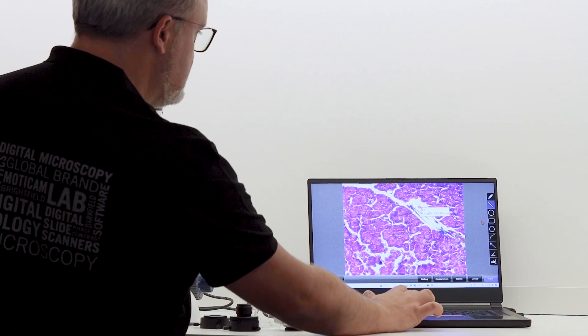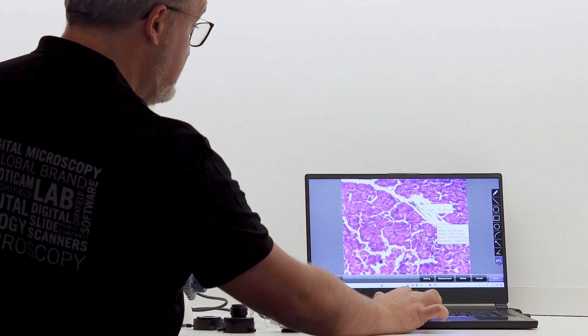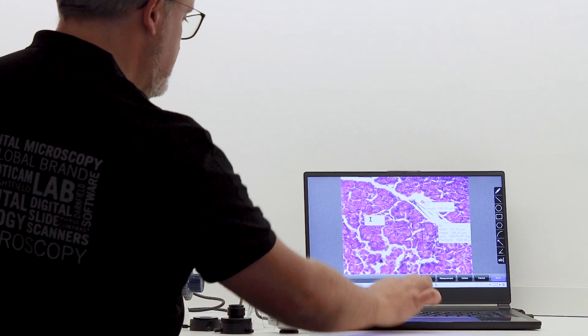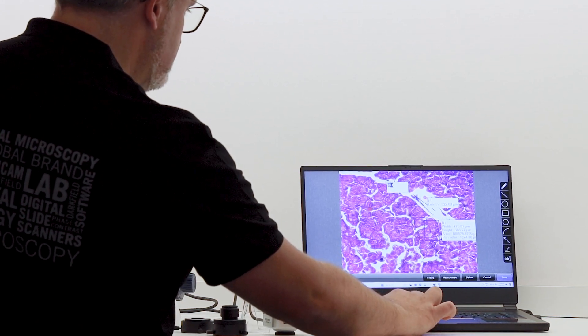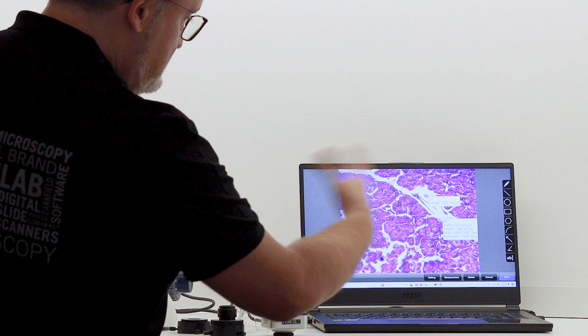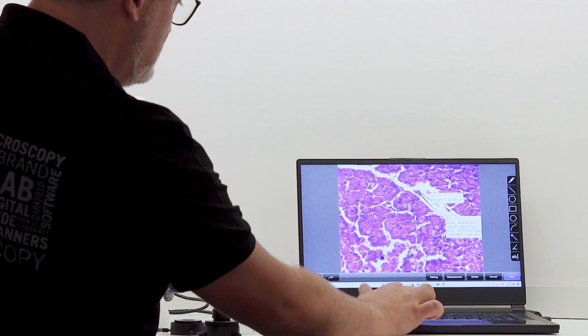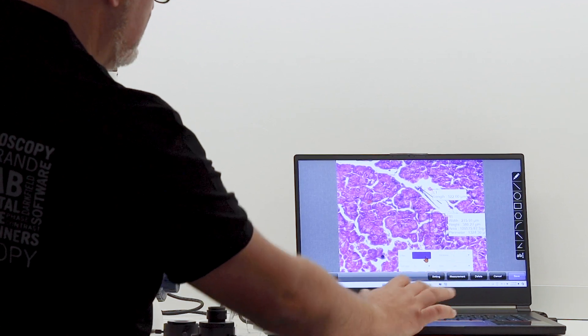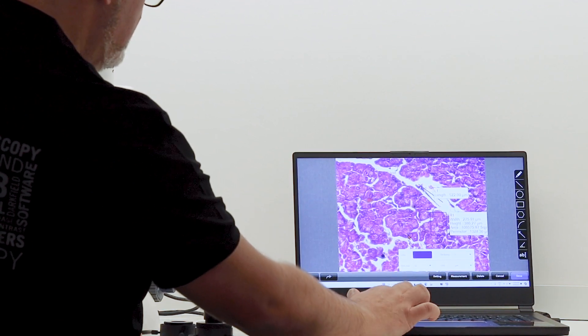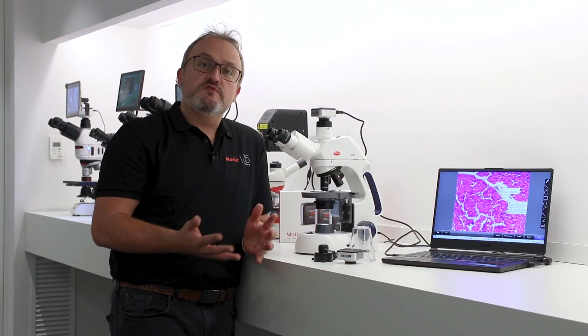I can start measuring lines, boxes. I can then also annotate if I found something interesting. If you don't see, for example, the blue text properly, you can change the color, you can change the thickness of the lines so it can stand out. This is really good for people who just want to do very quick labeling and measuring of certain images.